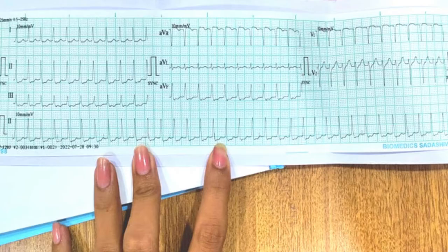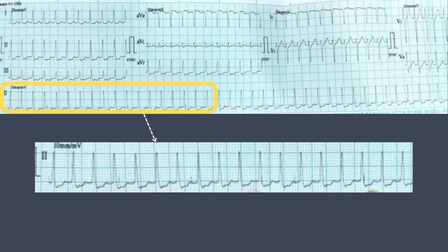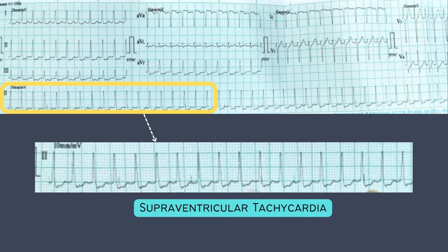What do you see here? The rhythm strip demonstrates a regular, narrow-complex tachycardia. It's supraventricular tachycardia, or SVT. If we talk about the type of SVT, it's most likely AVNRT.